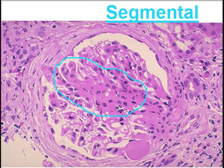Under the microscope, the renal biopsy showed involvement of only few glomeruli by the disease process. High power showed segmental involvement — only a portion of the glomerulus is involved.